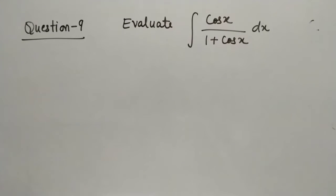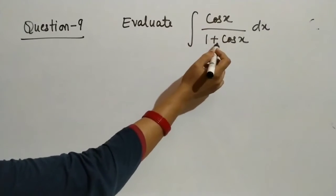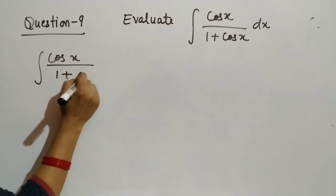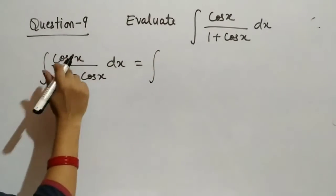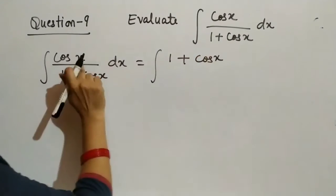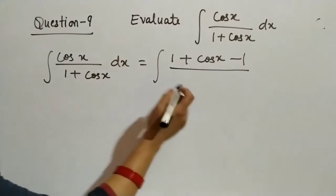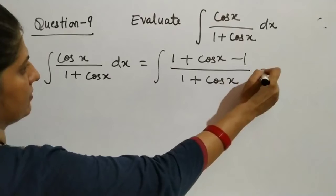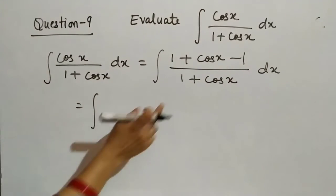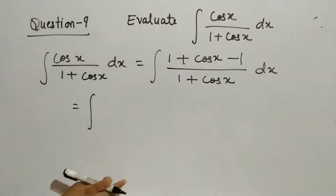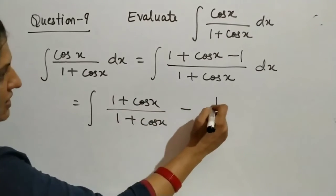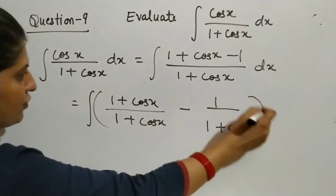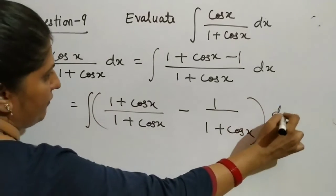Question number 9 is: evaluate integral of cos x over (1 plus cos x) with respect to x. For finding the integral of the given function, first we will simplify it. We will add and subtract 1 in the numerator while the denominator remains as it is. Then separating the terms, we have (1 plus cos x) over (1 plus cos x) minus 1 upon (1 plus cos x).